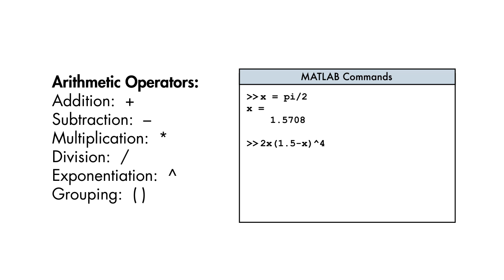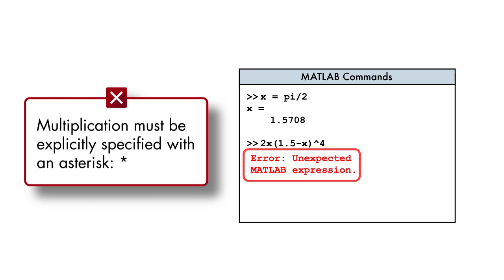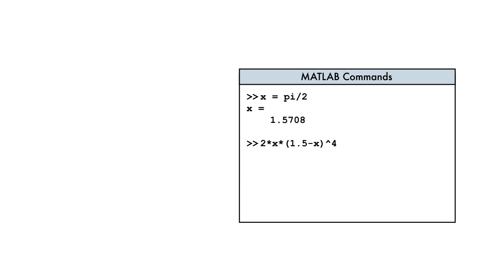We enter more complex formulas by using parentheses to group terms. Be sure to use an asterisk to indicate multiplication, or you'll get an error like this one. That's better. Notice that calculations that produce a very large or very small number are displayed using scientific notation.